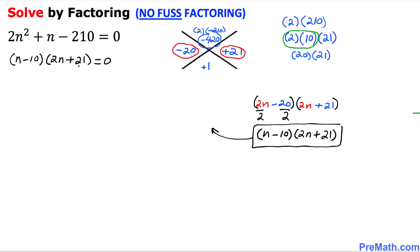Since these two factors are equal to 0, I can separate them. I can split them. n minus 10 equal to 0, and on this side, 2n plus 21 equal to 0.